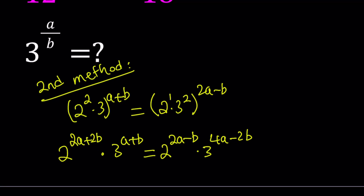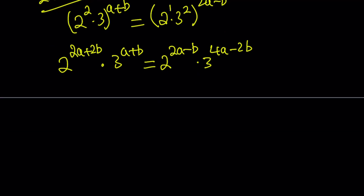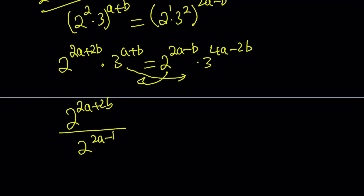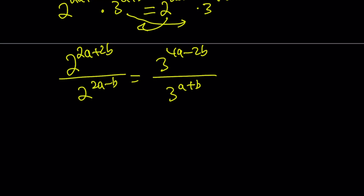We've got powers of 2 and 3 on both sides. Let's put them on the same side by division. Dividing gives us: 2 to the power 2a plus 2b, divided by 2 to the power 2a minus b, equals 3 to the power 4a minus 2b, divided by 3 to the power a plus b. When you divide two powers with the same base, you subtract the exponents. Subtracting 2a minus b from 2a plus 2b — the 2a cancels — gives 2 to the power 3b on the left. On the right, subtracting a plus b gives 3 to the power 3a minus 3b.